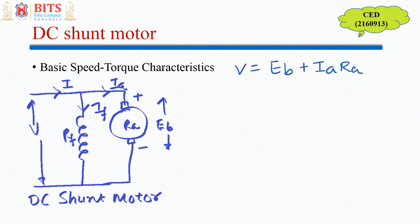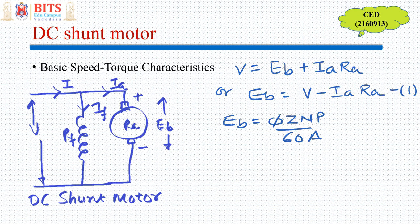So the basic equation still remains same V is equal to EB plus IaRa. So back EMF equation also remains similar to that of the separately excited DC motor. And in short, we have the back EMF equation and speed relation in the same manner as that of the separately excited DC motor.